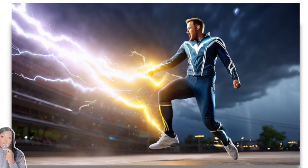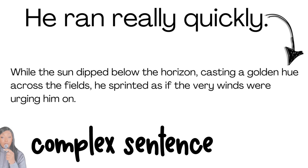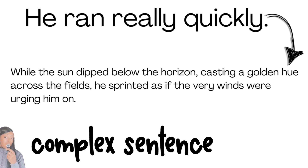but it emphasizes just how incredibly quick he was, adding flair and excitement to our sentence. Finally, we have complex sentences. These are sentences that contain an independent clause and at least one dependent clause, allowing for more depth and nuance.